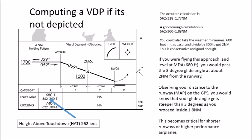Another way to look at this: in this particular approach I have weather minimums of 600 and 1. So if I just take the 600 and divide that by 300, I get two nautical miles, and that's certainly conservative and oftentimes good enough. If we're flying this approach and you're level at 680 feet, you would pass the three-degree glide angle intercept at about two nautical miles from the runway.